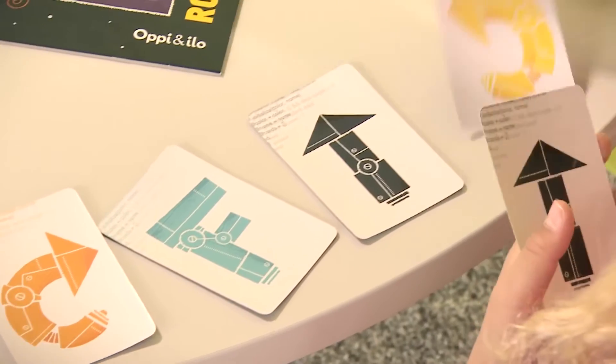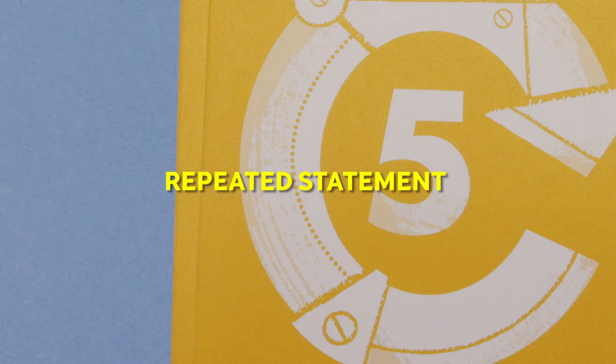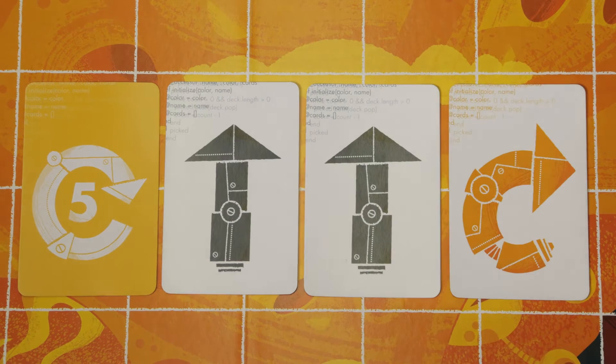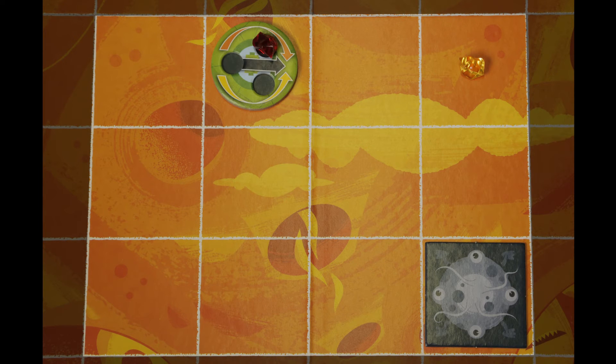You play repeat statement cards during your turn as part of your command series. What this means is that your robot will repeat the part of command series that is to the right of the repeat statement card. The robot repeats the command series until it faces an inoperable command.